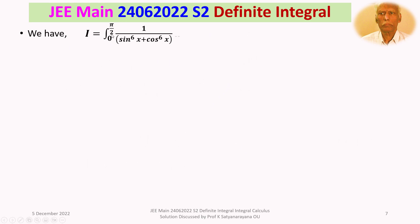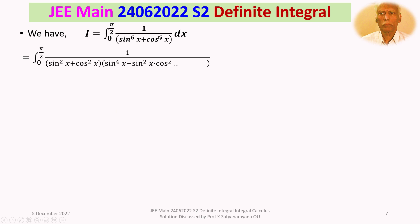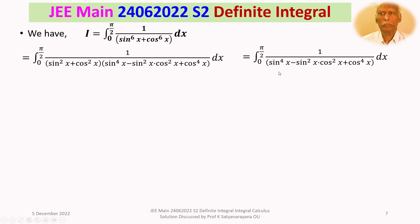We write sin⁶x + cos⁶x as (sin²x)³ + (cos²x)³ and apply the a³ + b³ = (a + b)(a² − ab + b²) formula with a = sin²x, b = cos²x. This gives the integral from 0 to π/2 of 1 divided by (sin²x + cos²x)(sin⁴x − sin²x·cos²x + cos⁴x) dx. Since sin²x + cos²x = 1, this simplifies to the integral from 0 to π/2 of 1/(sin⁴x − sin²x·cos²x + cos⁴x) dx.